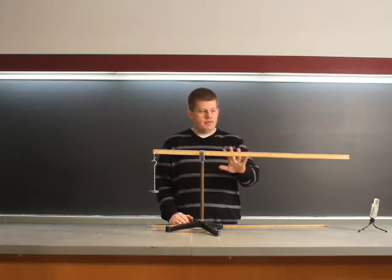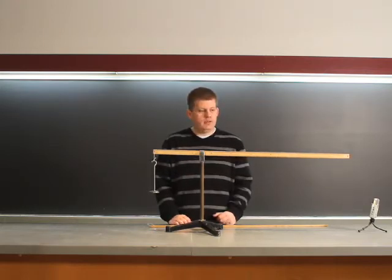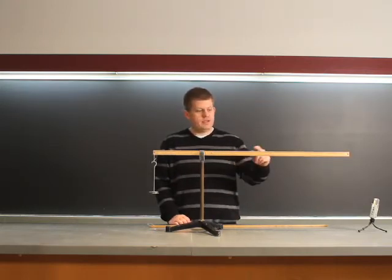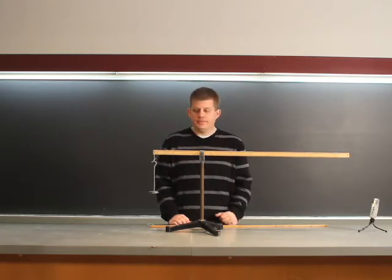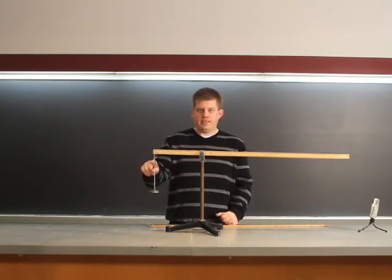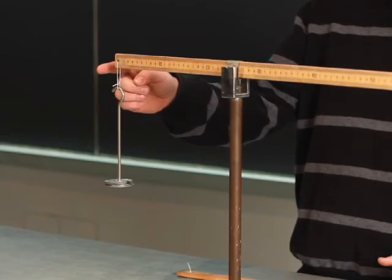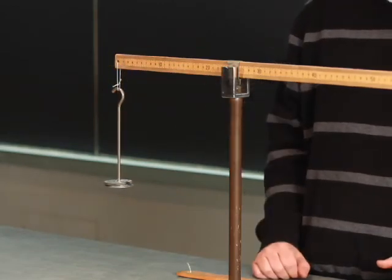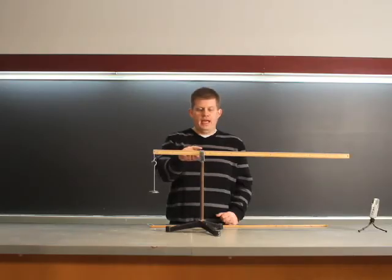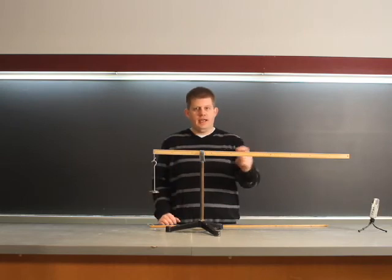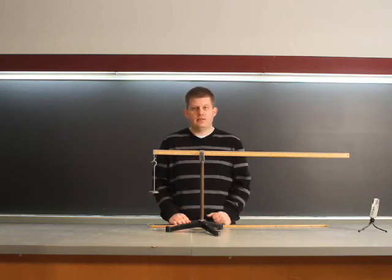If you look at the mass of the meter stick, it's a roughly uniform piece of wood, and the center of mass of the meter stick is at 50 centimeters. If the same mass is at the far end, then in order for this to balance, we need to put the balance point halfway between the far end and the 50 centimeters, which is at 25 centimeters.